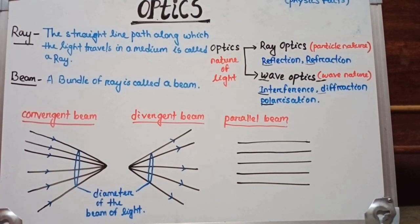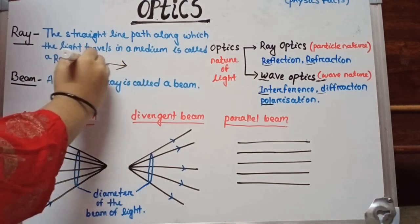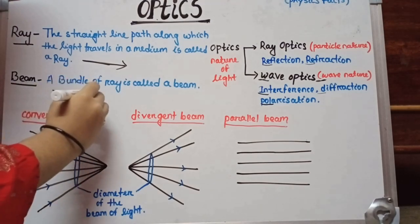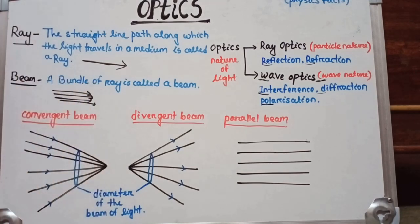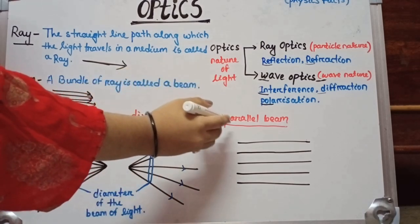What is a ray? The straight line path along which light travels in a medium is called a ray. A bundle of rays is called a beam. Beam is of three types: convergent beam, divergent beam, and parallel beam.